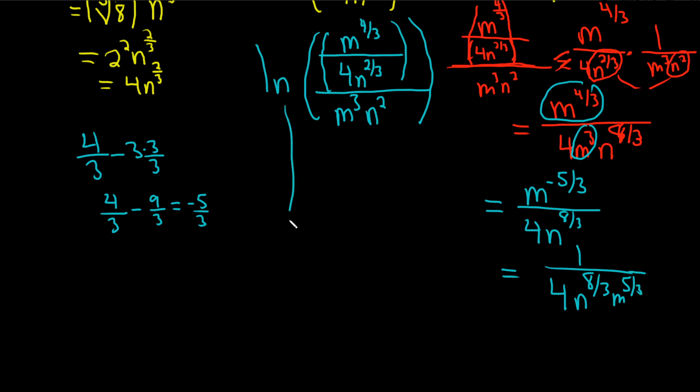So this is going to be one over 4n to the eight-thirds m to the five-thirds. Wow, a lot of work. So our final answer is going to be the natural log of one over 4n to the eight-thirds m to the five-thirds.